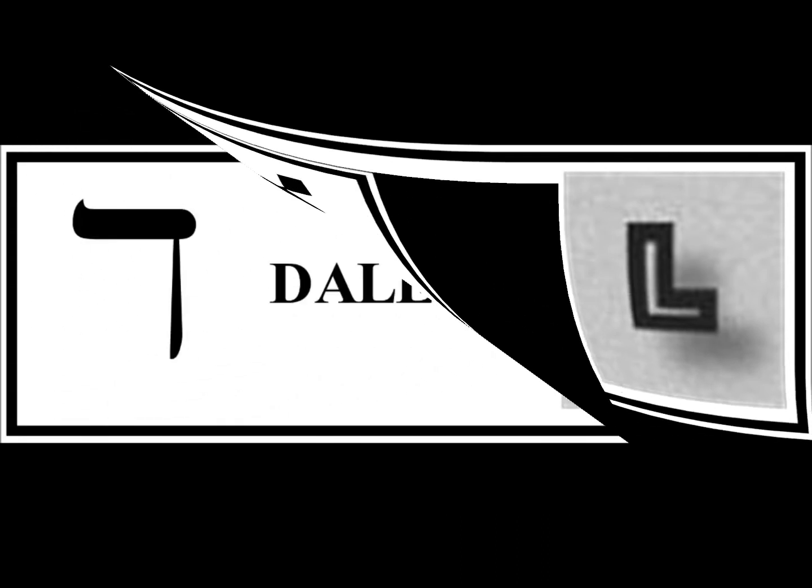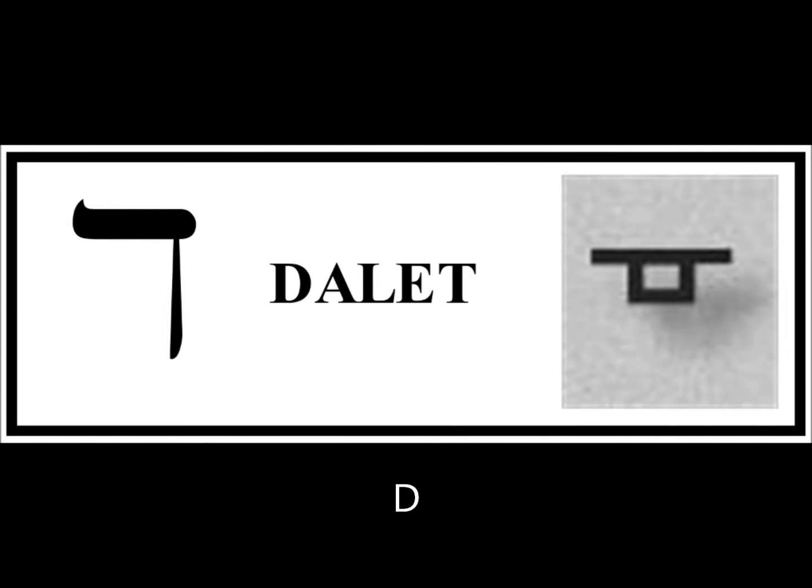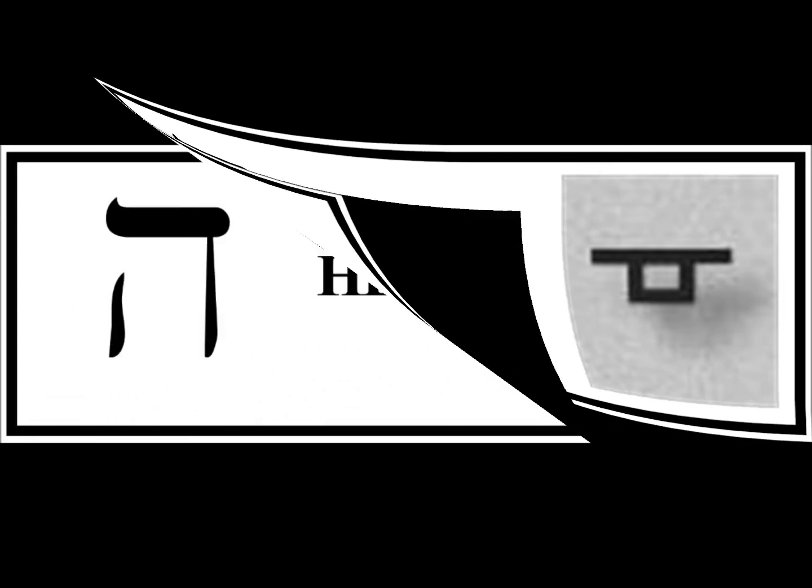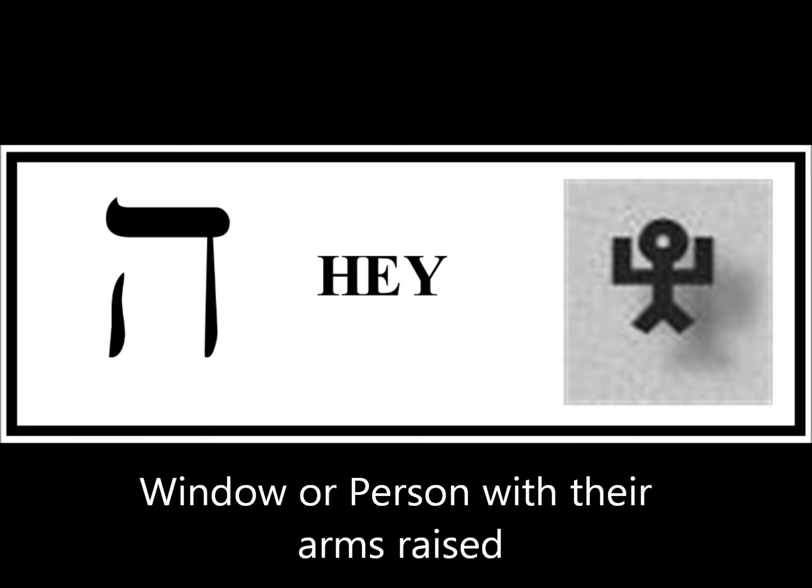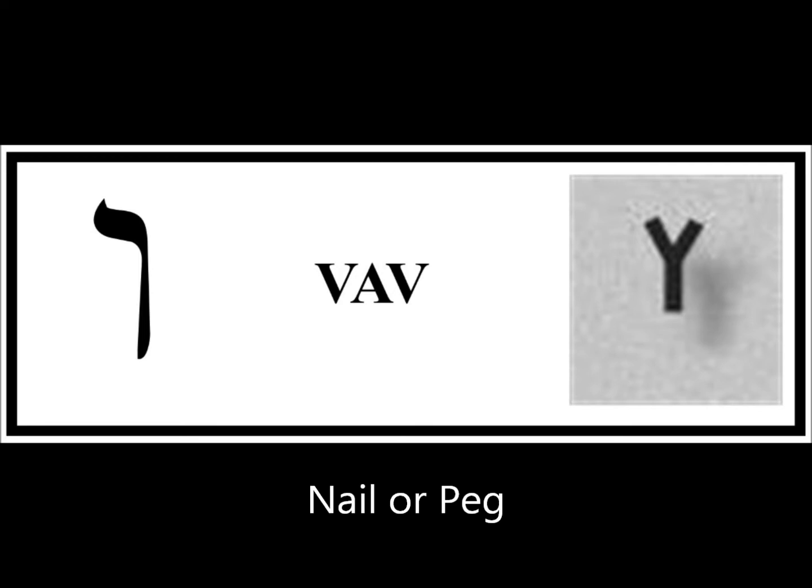Gimel is the third letter. It has a numerical value of three, a G sound, and it is a pictogram of either a camel or a foot. The fourth letter is Dalet, which has a numerical value of four and a D sound. It is a picture of a door. The fifth letter is He. Its numerical value is five. It has an H sound, and it is a picture of a window or of a person with their arms raised. The sixth letter is Vav. Its numerical value is six, and it has a V sound. It can be a picture of a nail or a peg.